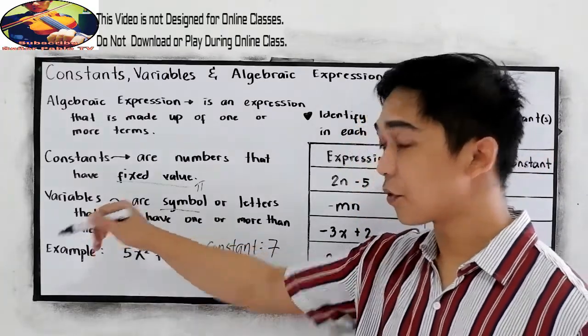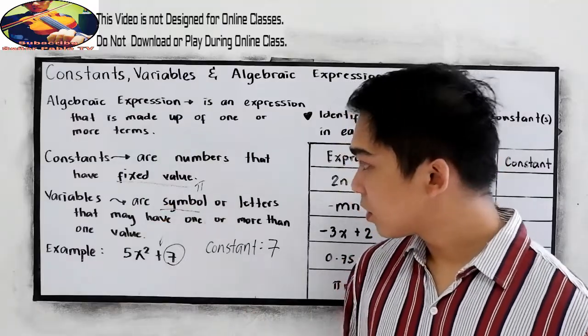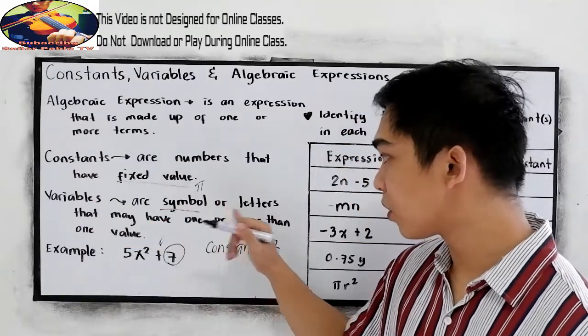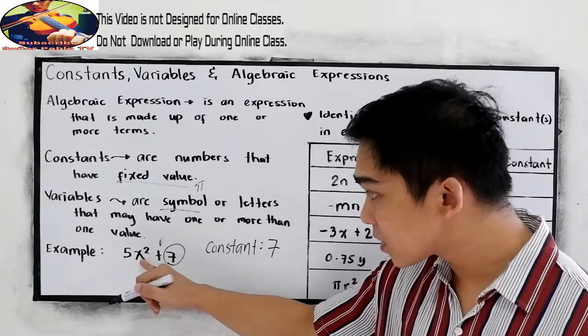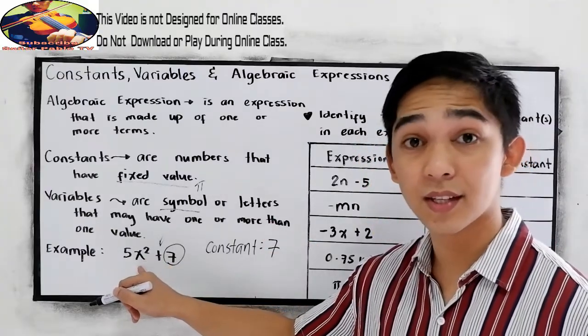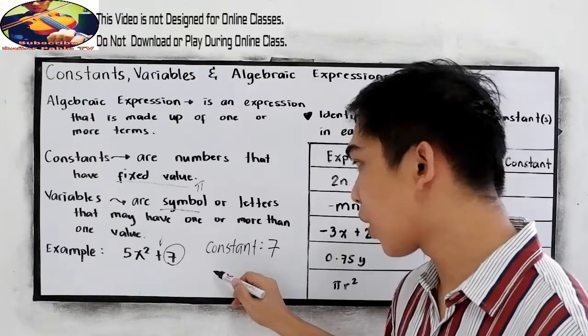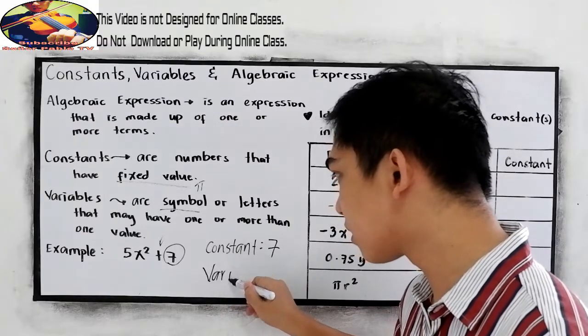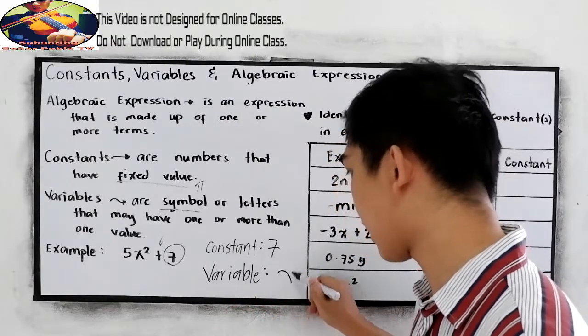And for our variable, our variable is a symbol or letters. In this case, we have a letter, which is x. So our variable is x.